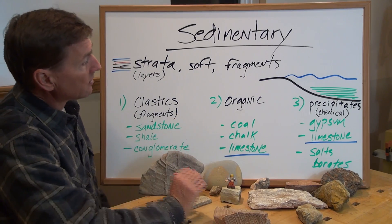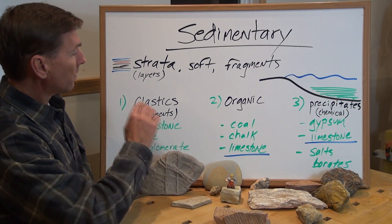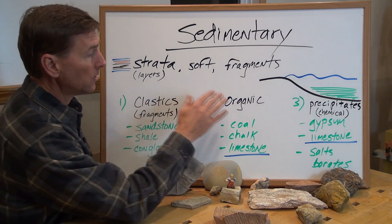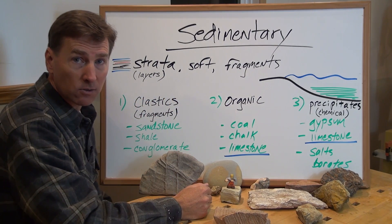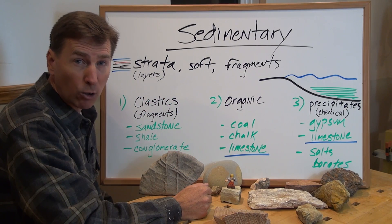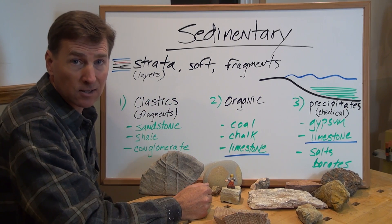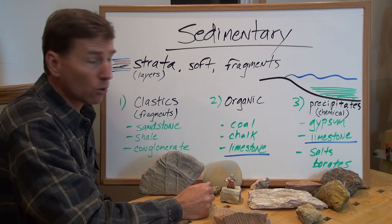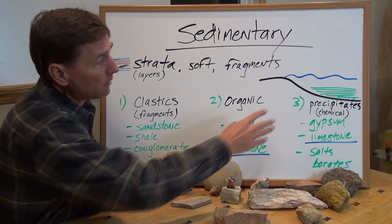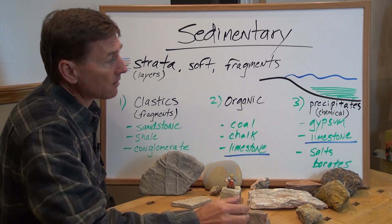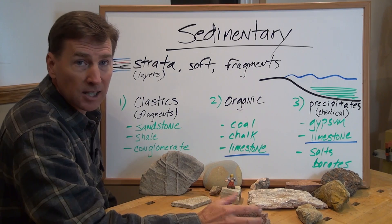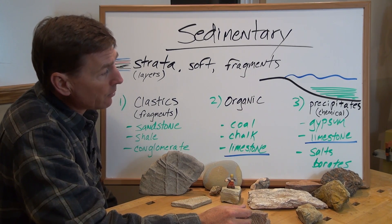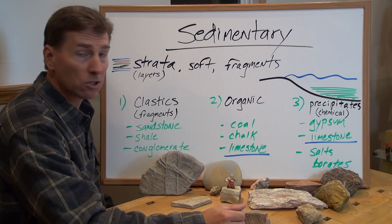Let's take a look at the subclasses. The clastics, like a sandstone. We have the organic rocks — that would be like coal or limestone, which has old ocean animals like corals. And then precipitates, also known as chemical rocks. A good example of that would be a limestone or salts.